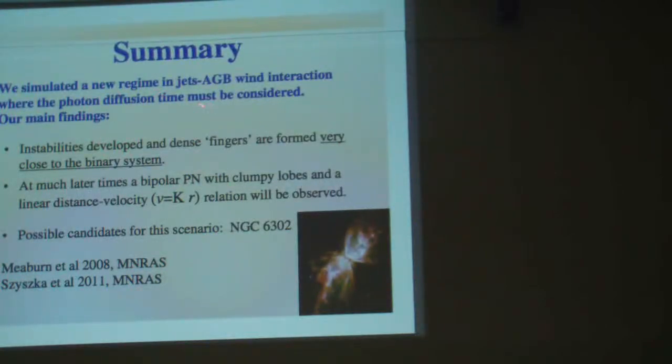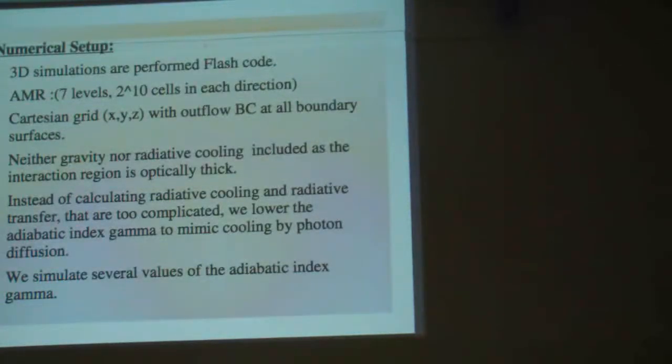And we looked at the ratio of time, Rayleigh-Taylor and flow time, sorry, the time of the simulation. About the different colors here, red regions are less stable. In yellow regions, the instability growth time is low, and white actually is stable. So to summarize, we simulated a new regime in jet-AGB wind interaction, where the photon diffusion time must be considered. Our main findings are as the following. Instabilities developed and dense fingers are formed very close to the binary system. At much later times, a bipolar planetary nebula with clumpy lobes and a linear distance-velocity relation will be observed, like this one, which is NGC 6302. This is actually one possible candidate for our research. Here is actually the same picture, but louder, and here if anybody is interested in the numerical setup, you can read here or can talk to me later. Okay, thank you very much.